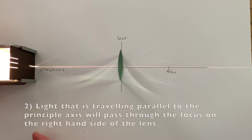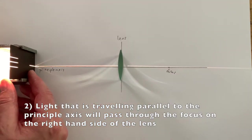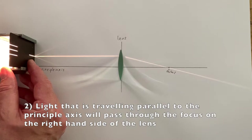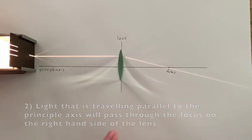The second property is that any light that is travelling parallel to the principal axis, the line that goes through the centre of the lens, will always leave the lens in such a way that it travels through the focus on the other side of the lens.